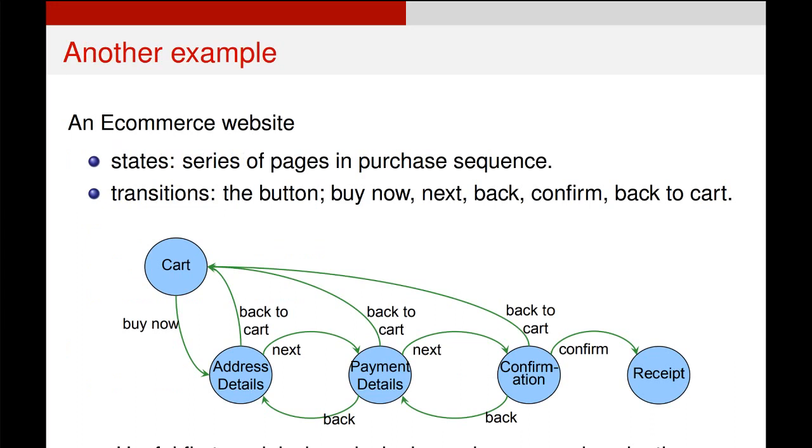For another example, just to stress this point, here's a finite state machine describing the flow and navigation through an e-commerce website. So you can see you might start with a cart state and then by pushing the buy now button, you move on to address details and then next and next and next can take you through that. This just points out that finite state machines, as well as describing systems, are great tools for designing them. This is a finite state machine specifically for designing navigation through an e-commerce website, some kind of standard cart.